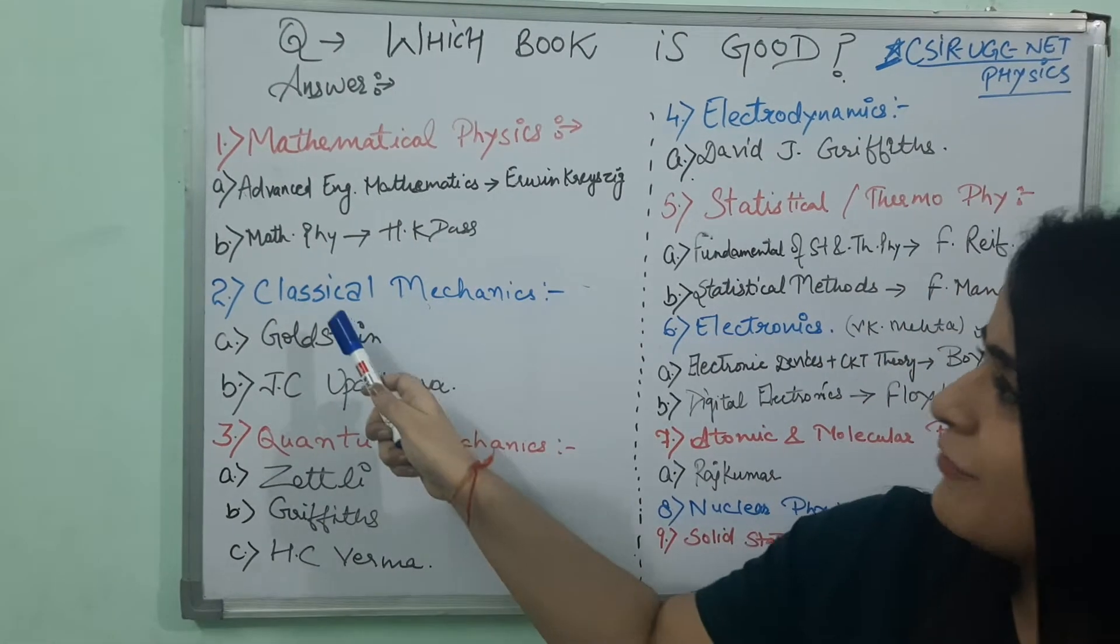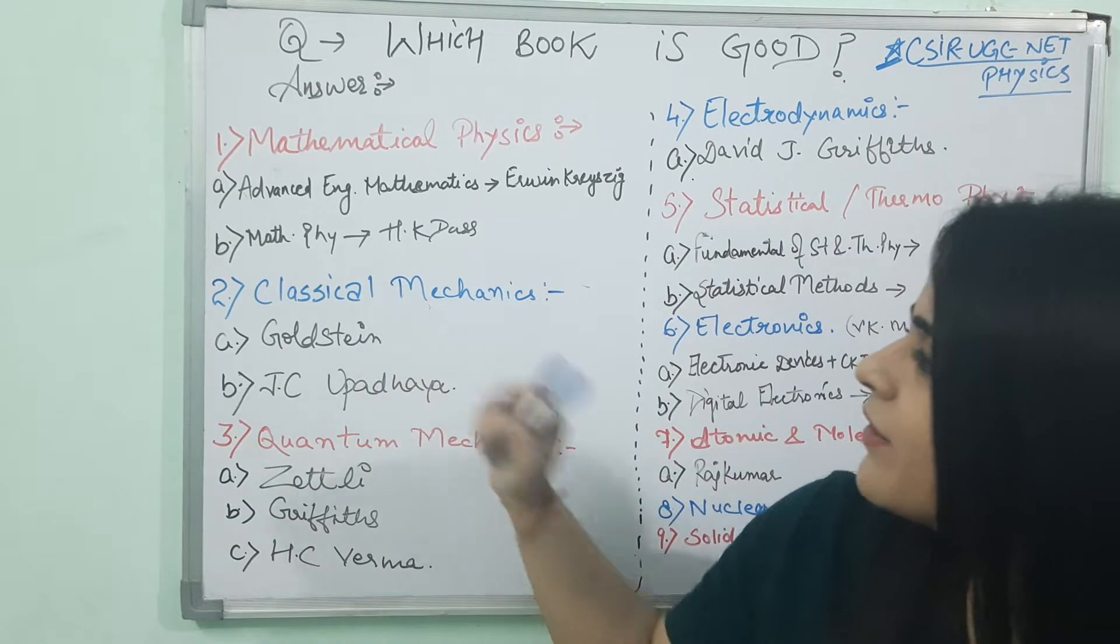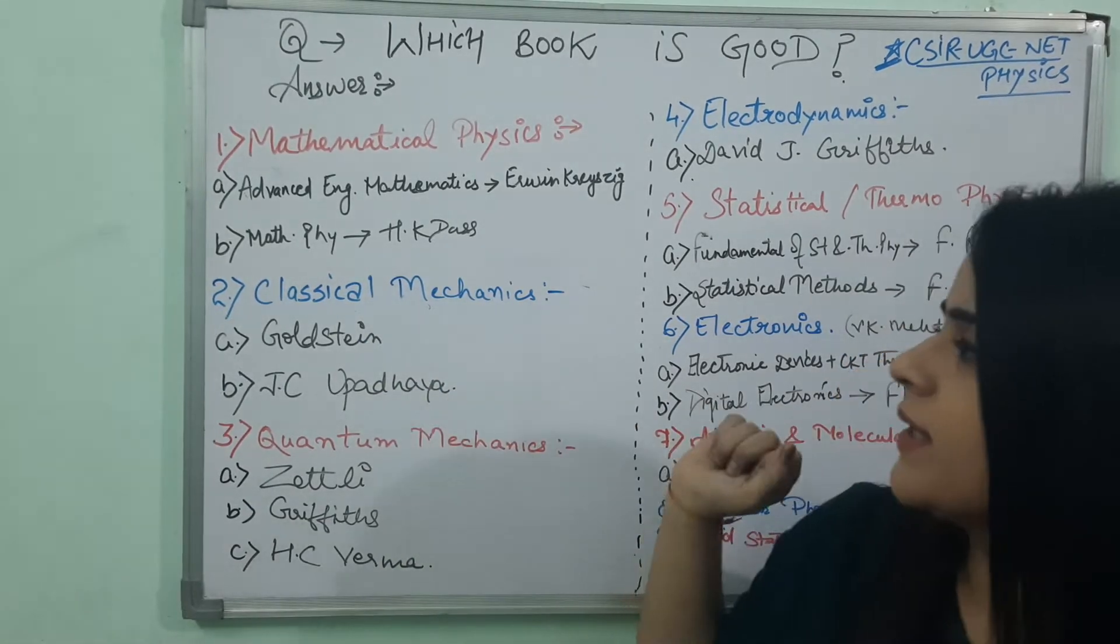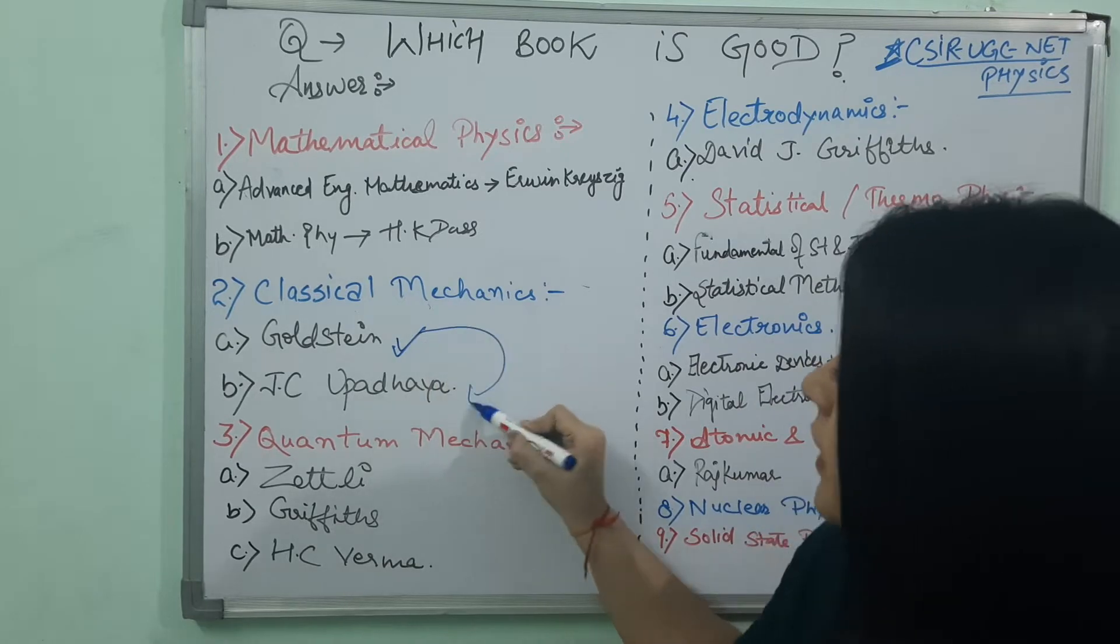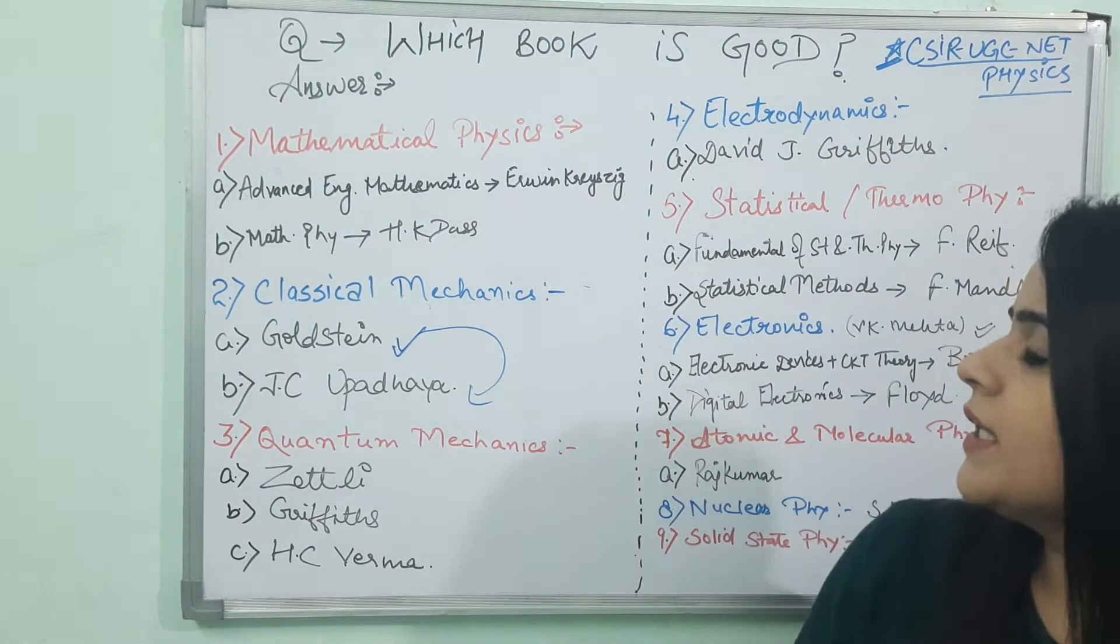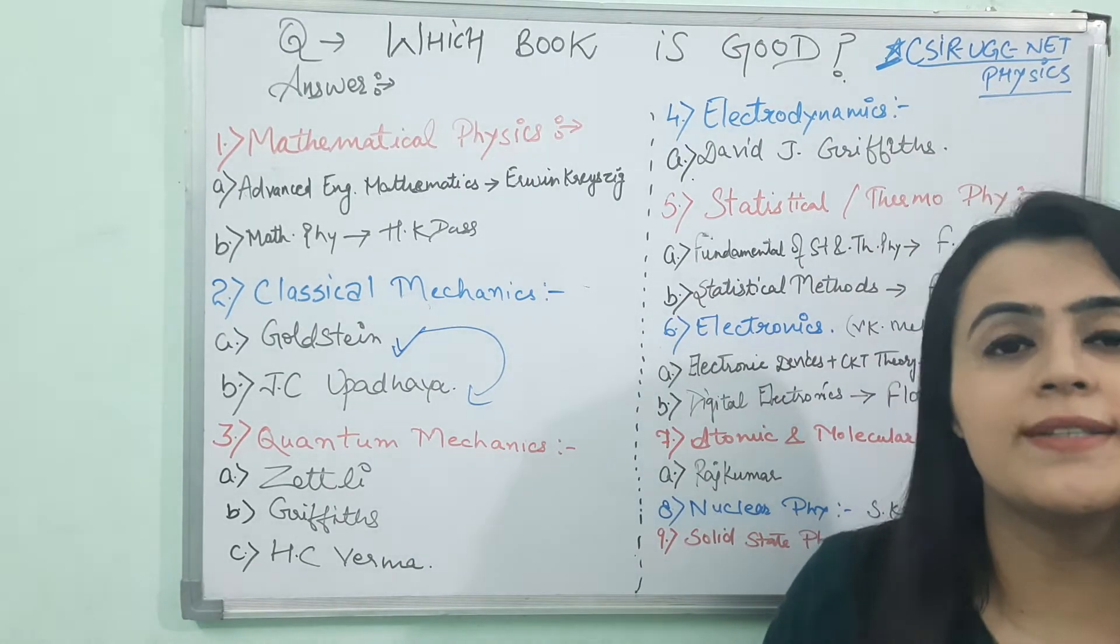Then the second part of physics paper is Classical Mechanics. For Classical Mechanics, I refer you Goldstein and J.C. Upadhyaya. Like if you are done with Goldstein, for more examples cover J.C. Upadhyaya. It is very important book for Lagrangian, Hamiltonian, Central Force Motion examples.